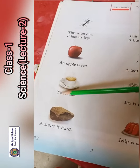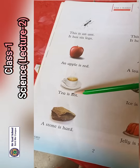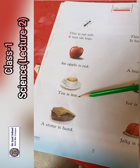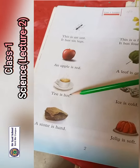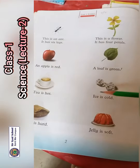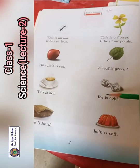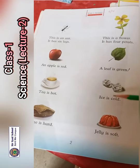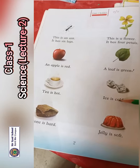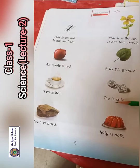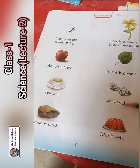T-E-A, tea. Tea is hot — T-E-A I-S H-O-T. Tea is hot. Chai hoti hai, woh garam hoti hai. I-C-E, ice. Ice is cold — I-C-E I-S C-O-L-D. Ice is cold. Baraf thandi hoti hai.